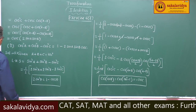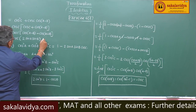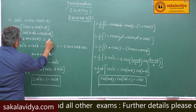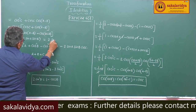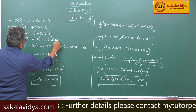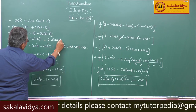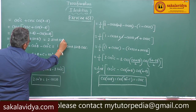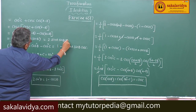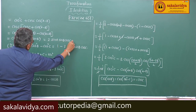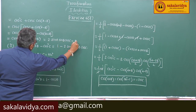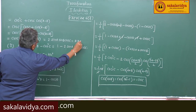So this equals 2 sin a sin b cos c, which is the right hand side.